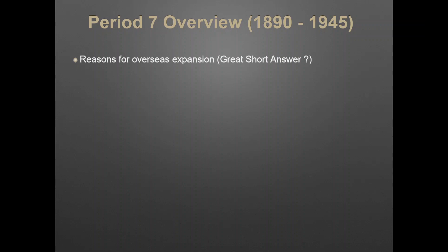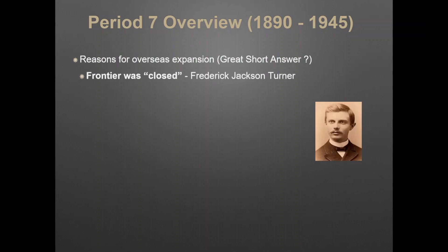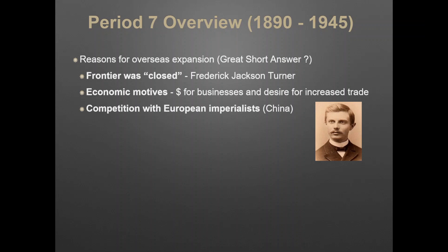What were some of the reasons for America expanding overseas? The frontier was closed — the Frederick Jackson Turner thesis. America had economic motives for businesses and desire to increase trade. They wanted raw resources because of industrialization. Competition with European countries — like in China, European powers were carving up spheres of influence, and that's where America did the Open Door Note where they wanted free trade. And the whole idea of racial theories, like White Man's Burden and Social Darwinism.